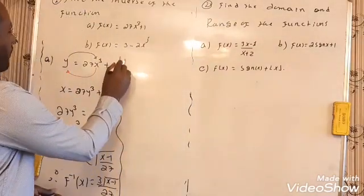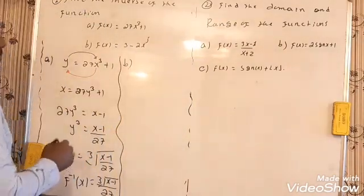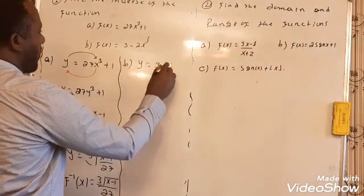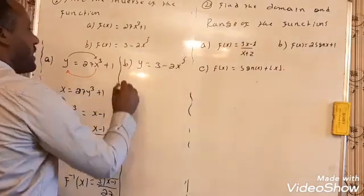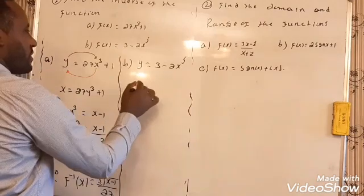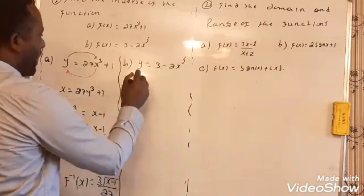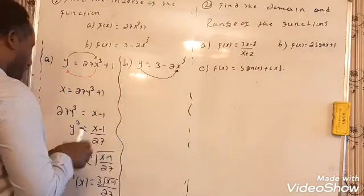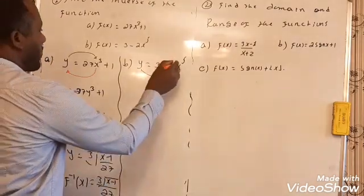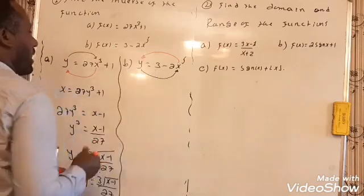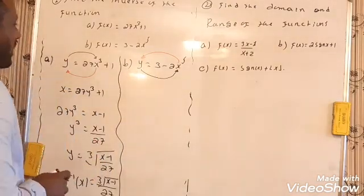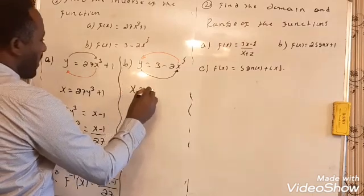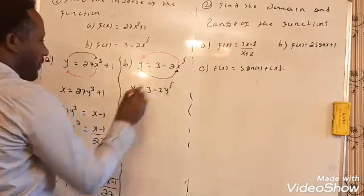On the second problem (b), f(x) is given by 3 − 2x⁵. Let's change the position of x and y — bring x to the left side in place of y. So x = 3 − 2y⁵.